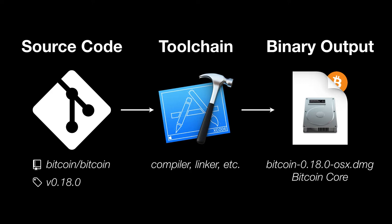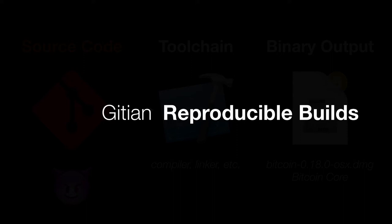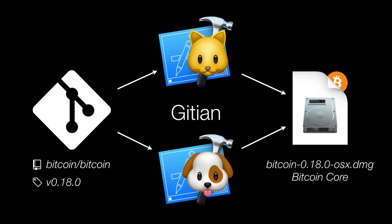But knowing this doesn't give us any guarantees. How do we know that the binary we downloaded from bitcoincore.org corresponds to the Bitcoin 0.18 source code? How do we know that whoever uploaded this binary didn't modify the source code so that it uploads your private keys to a malicious server? This is where Gitian reproducible builds come in. What Gitian ensures is that given identical source code, we will get identical binary outputs. This means that anyone can use the Bitcoin 0.18 source code and produce a disk image identical to the one we downloaded. We don't have to trust bitcoincore.org — we can verify for ourselves.